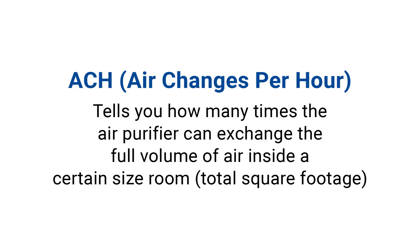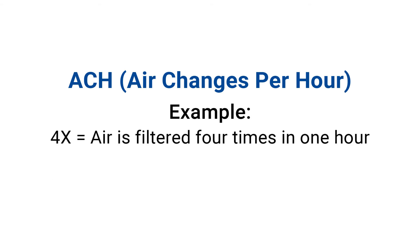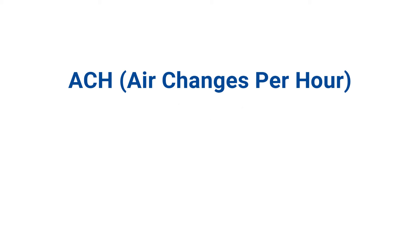Now, what is the ACH rating of an air purifier? The ACH rating tells you how many times the device can exchange the full volume of air inside a room. For example, a 4x ACH rating means that the air is filtered four times in one hour. The higher the ACH rating, the more efficient the device is at cleaning the air for a certain room size.